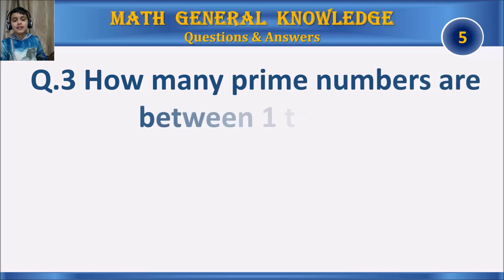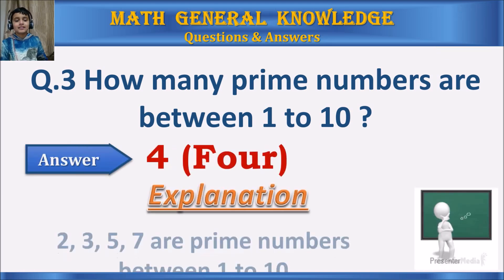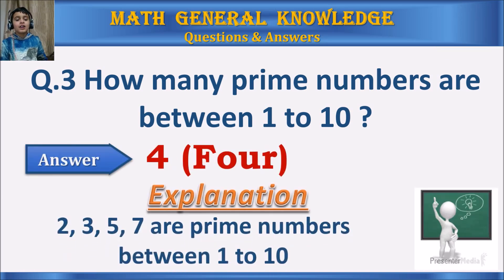Question 3: How many prime numbers are there between 1 to 10? Your time starts. The answer is 4: the numbers 2, 3, 5, and 7 are prime numbers between 1 to 10.